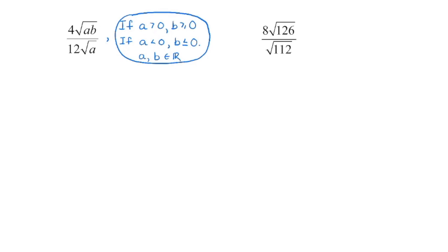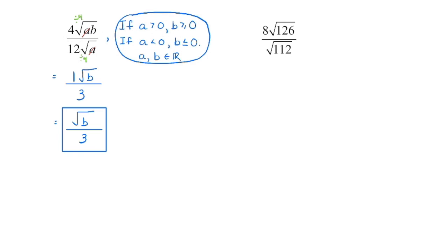When we simplify, we begin with the coefficients: 4 divided by 12 reduces to one third, since 4 is the largest number dividing evenly into both. Then we divide the radicands. When dividing powers with the same base, we subtract the exponents: 1 minus 1 is 0, so a to the power of 0 equals 1, meaning those a's cancel out. We're left with the square root of b divided by 3. There are no perfect squares in here and no radical in the denominator, so this is fully simplified.